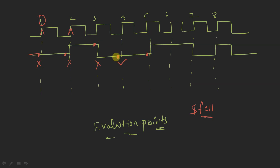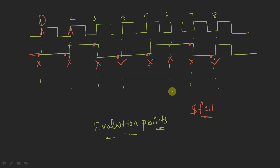At the fifth clock cycle both the current and previous evaluation point values are 0, so there is no transition and the assertion fails. At the sixth clock edge the value was 1 and at the fifth it was 0 — that is a positive (rising) transition, not a falling transition, so it fails. At the seventh clock edge it also fails. At the eighth clock edge, the current evaluation point value is 0 and the previous value was 1, so there is a falling transition and the assertion passes.